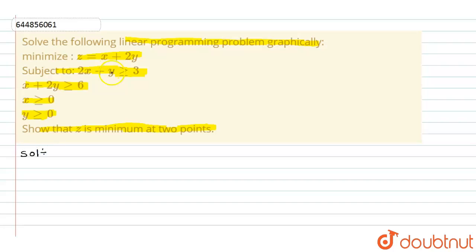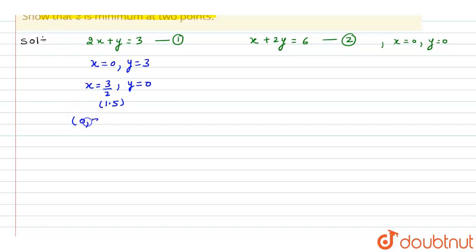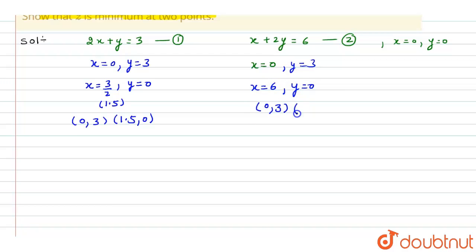First, we write the corresponding equations. Equation 1: 2x plus y equal to 3, and Equation 2: x plus 2y equal to 6, with x equal to 0. To find the shaded region, we get the intercepts. For Equation 1: points are (0, 3) and (1.5, 0). For Equation 2: points are (0, 3) and (6, 0).